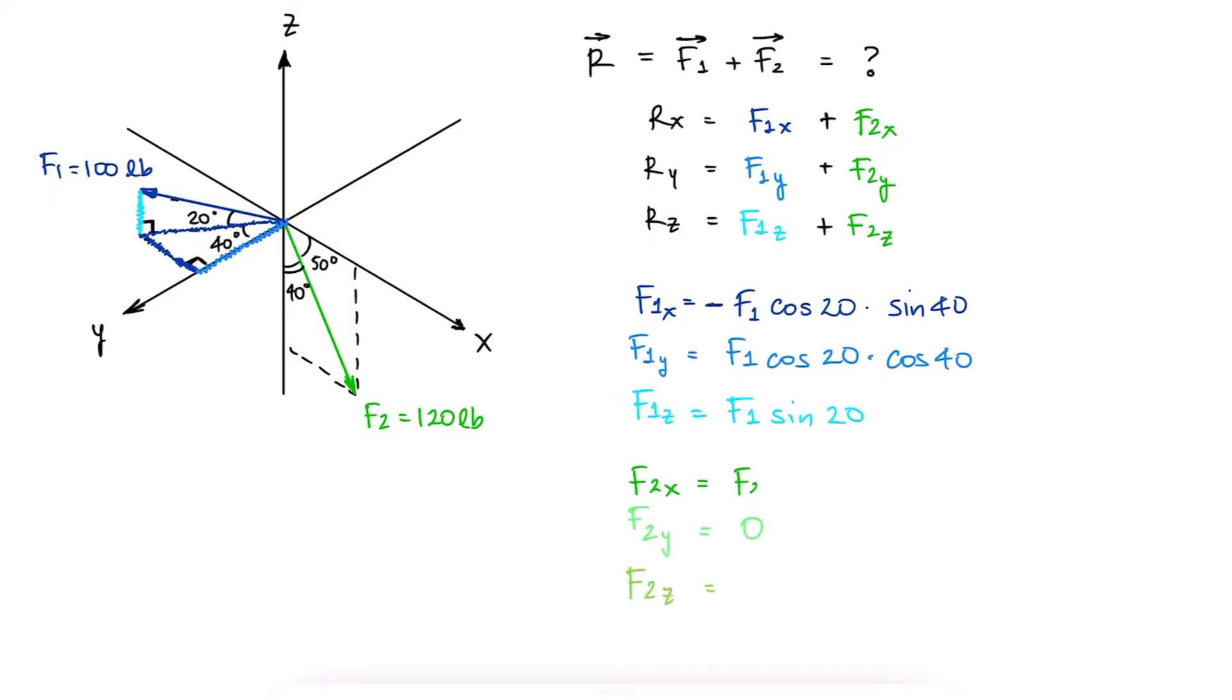The x component is the adjacent side to the 50-degree angle or the side opposite to the 40-degree angle. Either one works. In the same way, the z component is either the opposite side to the 50-degree angle or the adjacent side to the 40-degree angle. And just like the x component of F1, the z component of F2 is negative.